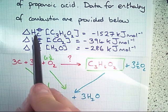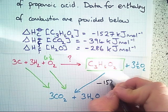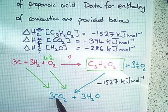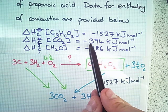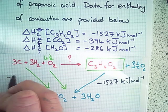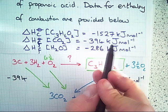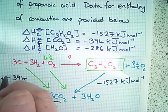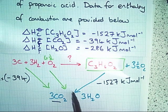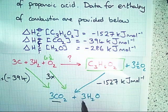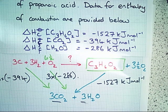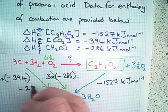Having constructed the Hess cycle, we can now slot the data into it. The enthalpy change of combustion of propanoic acid is minus 1527 kilojoules per mole. The enthalpy change of formation of carbon dioxide is minus 394 kilojoules per mole for one mole, but since three are being formed, we need three times that. Similarly for the enthalpy change of formation of water, we need three times that value, as three water molecules are being formed. This part of the calculation comes out as minus 2040 kilojoules per mole.